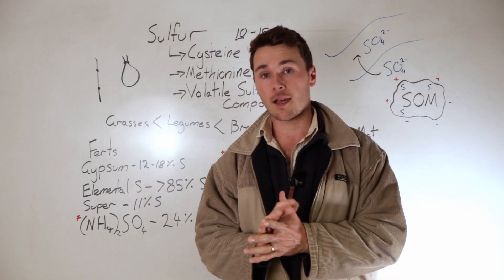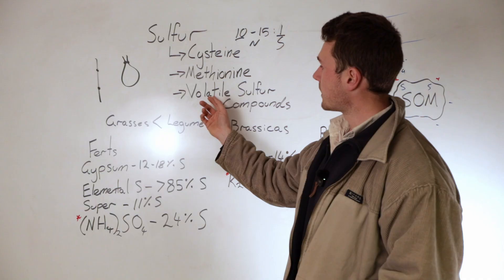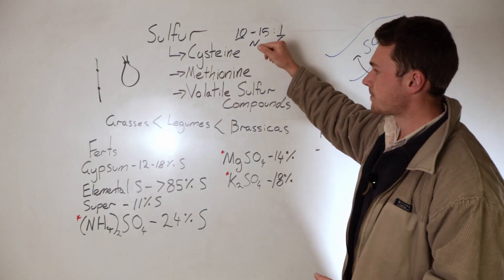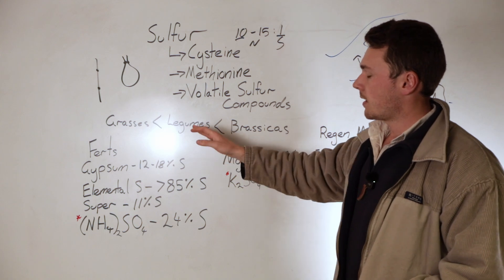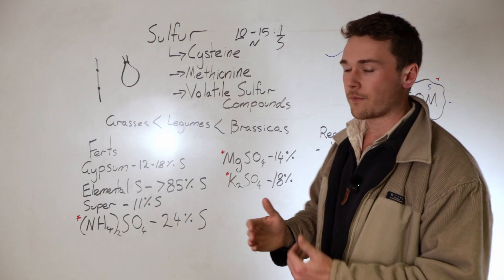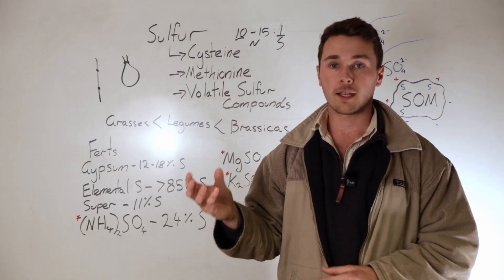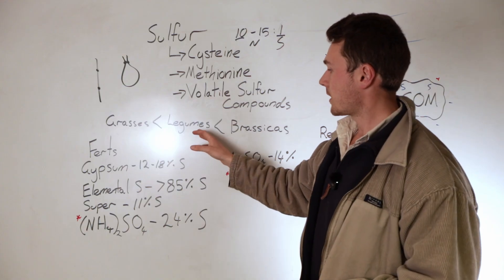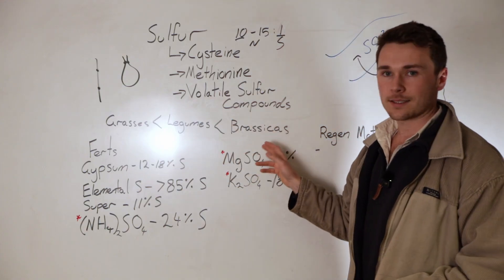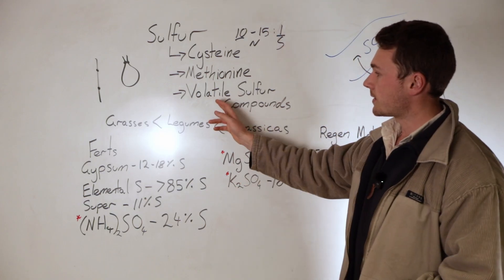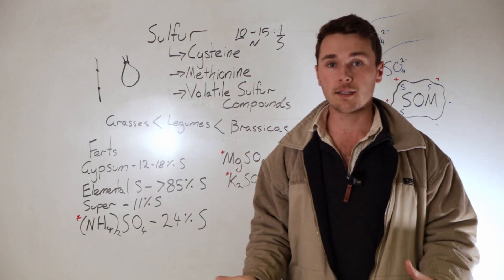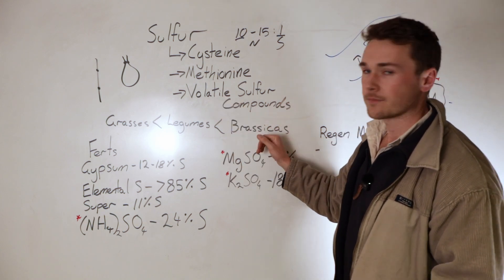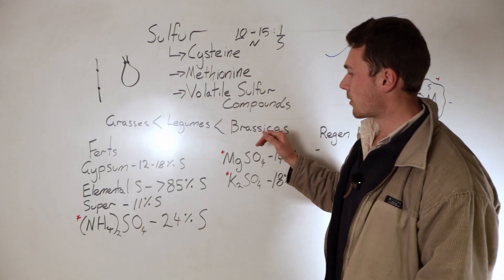Sulfur requirements for different crops vary a fair amount, just depending on the amount of these volatile sulfur compounds. Grasses are quite low. They still need to produce cysteine and methionine, but not so much these volatile sulfur compounds. Legumes require sulfur in a fair amount for the formation and the development of their nodules. You'll learn all about sulfur requirements for nodule development in our How to Boost Nitrogen Fixation Legume video. But more specifically, brassicas require a lot of sulfur for these compounds. If you think about going through a canola paddock, it typically smells like what you'd associate sulfur with. That is because of these volatile sulfur compounds, and brassicas produce a lot of them. So brassicas require a lot of sulfur to do that.